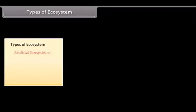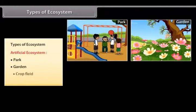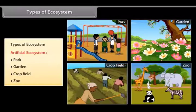2. Artificial ecosystem in which, example, parks, gardens, crop fields, zoo, etc. are exists.